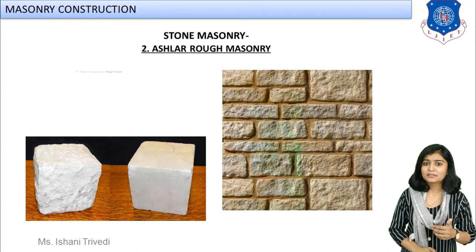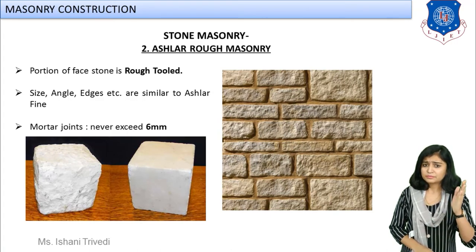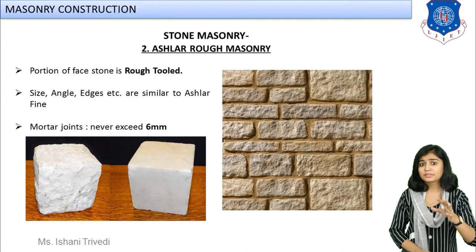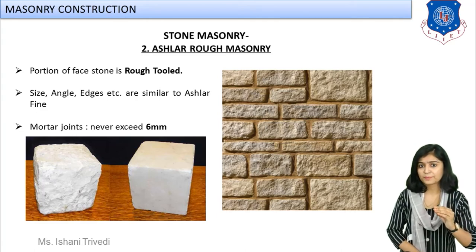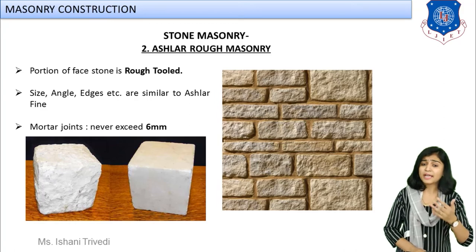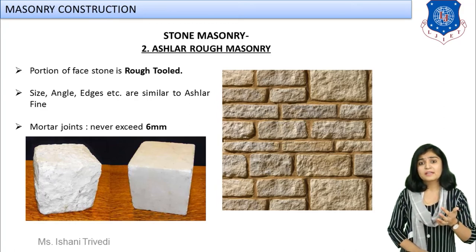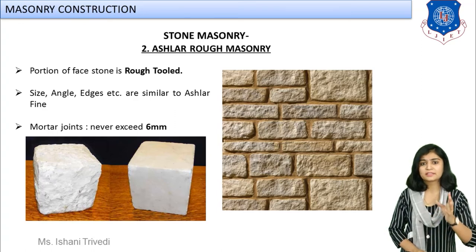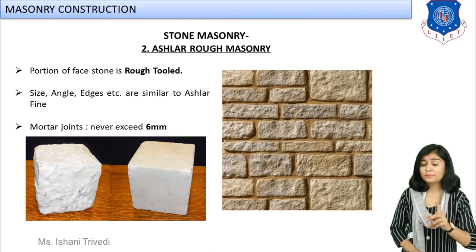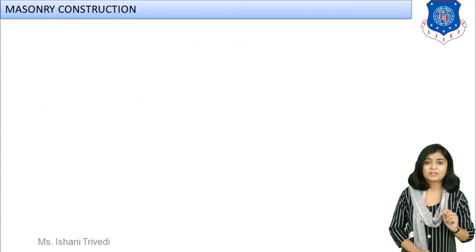The second type is ashlar rough-tooled masonry. Comparing a rough-tooled block to a fine-tooled block, there is not much difference between the two types. The major difference is only the fineness and smoothness of the surface — in rough tooled, the surface is kept rough. Sometimes clients require such rough-facing masonry, which can also look good. Otherwise it is the same as ashlar fine-tooled. We can also conclude that ashlar masonry will be costlier compared to rubble masonry.